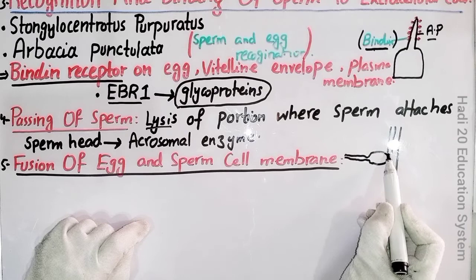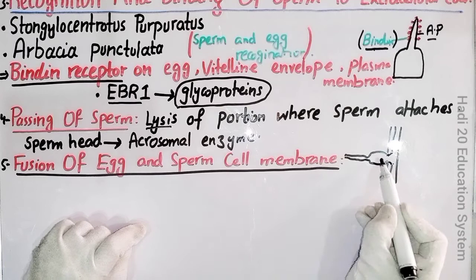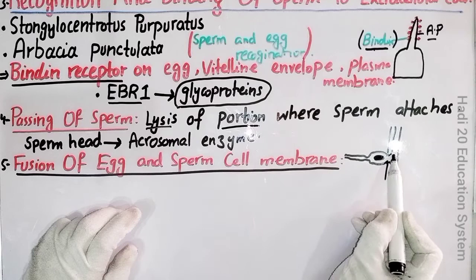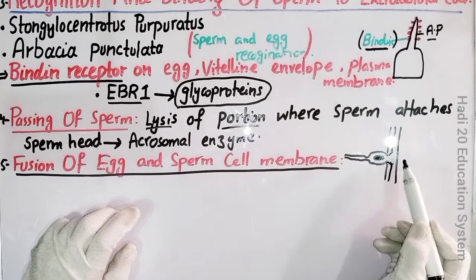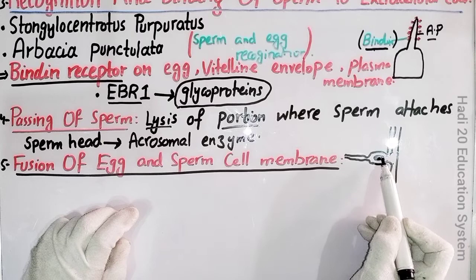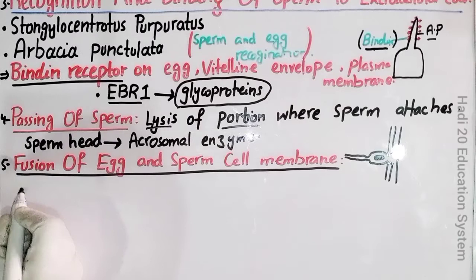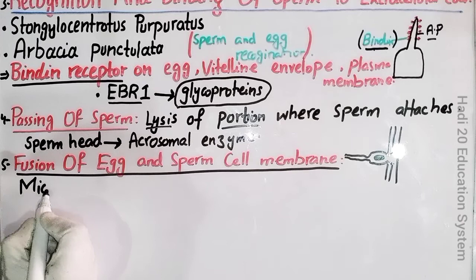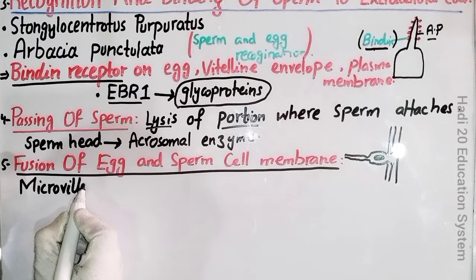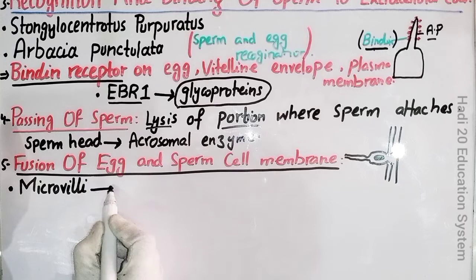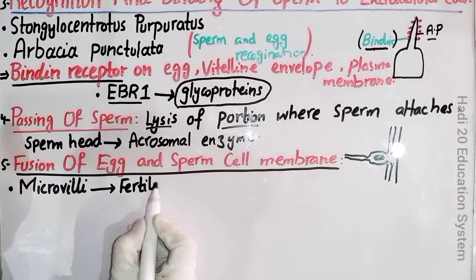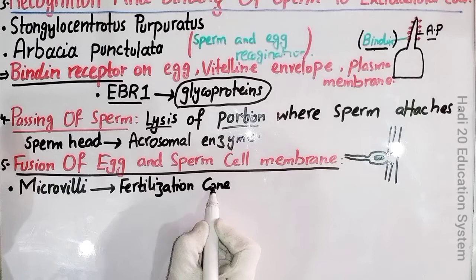جیسے یہ ٹوٹا، یہ membranes آپس میں اس طرح سے attach ہو جائیں گی — as the breakdown of the portion of the jelly coat/vitelline envelope occurs, as a result the cell membrane of the sperm cell combines with the cell membrane of the egg cell۔ جو sperm-egg binding regions ہوں گے وہاں پر بہت سارے finger-like projections دیکھنے کو ملیں گے، اور ہم ان کو نام دیں گے microvilli۔ یہ microvilli dear friends fertilization cone بنا دیں گے۔